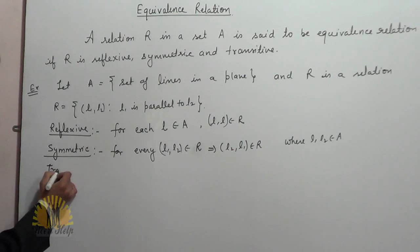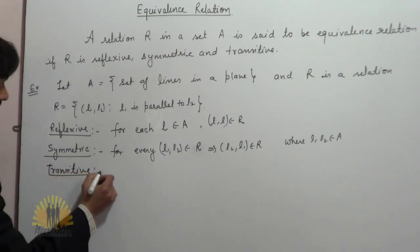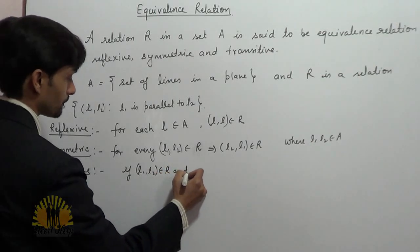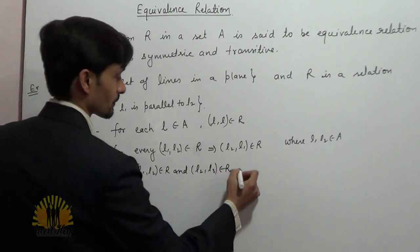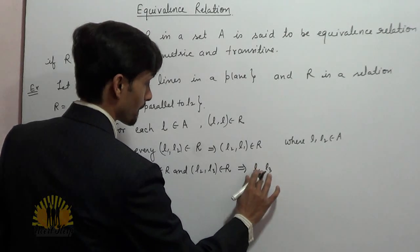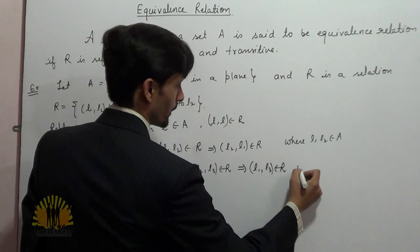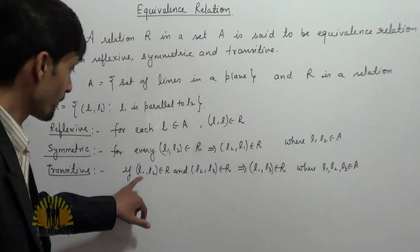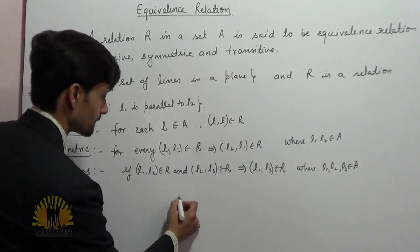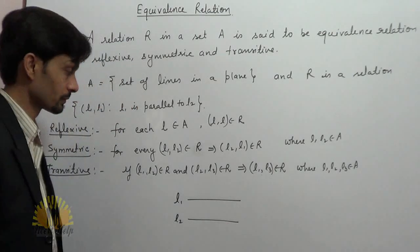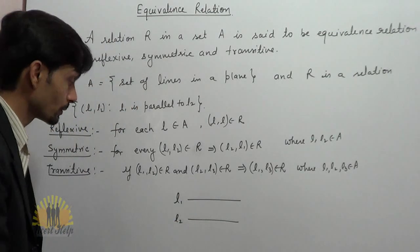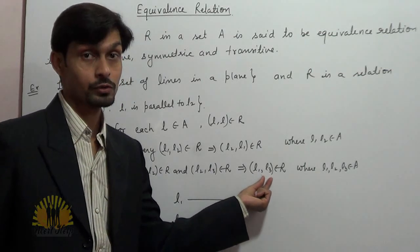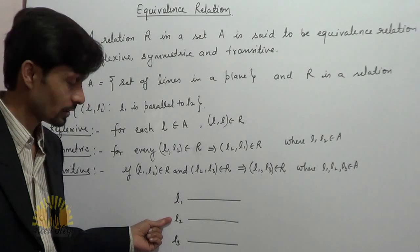Now check the third condition: Transitive. If (L1,L2) belongs to R and (L2,L3) belongs to R, this implies (L1,L3) belongs to R, where L1, L2, L3 are contained in set A. If (L1,L2) belongs to R, it means line 1 is parallel to line 2. And if (L2,L3) belongs to R, it means line 2 is parallel to L3. Then (L1,L3) must also belong to R, because if L1 is parallel to L2 and L2 is parallel to L3, then L1 is parallel to L3 as well.